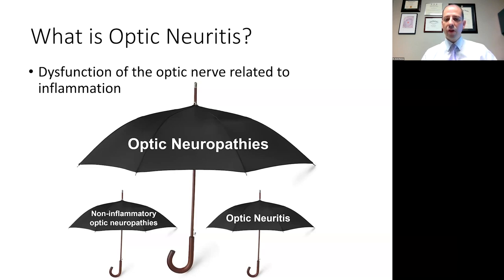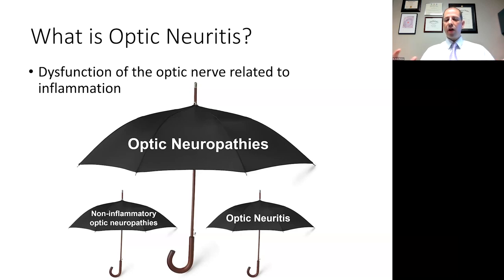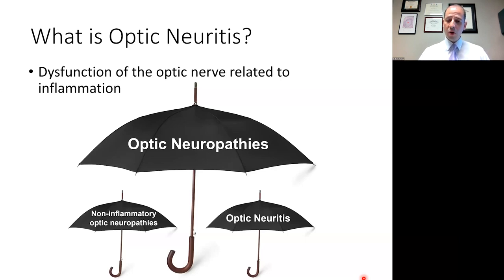So first, what is optic neuritis? We have a great variety of people joining us today, some trainees and some neuro-ophthalmologists who have been in practice for some time, so we'll have both basic and advanced concepts. I would define optic neuritis as dysfunction of the optic nerve that is related to inflammation. We can consider all optic neuropathies under a large umbrella, and optic neuritis would be a subset, to distinguish it from other non-inflammatory optic neuropathies. It can also describe optic nerve dysfunction associated with infection or with inflammation from other systemic conditions, but today we'll be approaching it mostly as an autoimmune-related disorder.